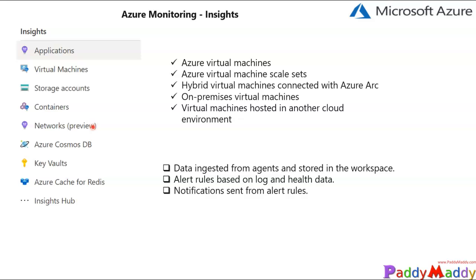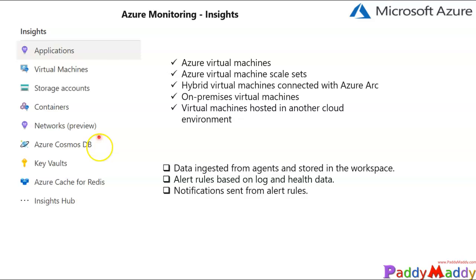Coming back to Networks — we have very detailed network information available. For greater details you can locate Network Watcher, which has a dedicated lecture, but I'm going to touch on it within this lecture as well. A detailed dedicated lecture for Network Watcher is available in either the monitoring section or the networking section. You can also get Azure Monitor for your Cache and Redis, which gives the overall performance, failures, capacity, and operational health of your Azure Cache for Redis resources.